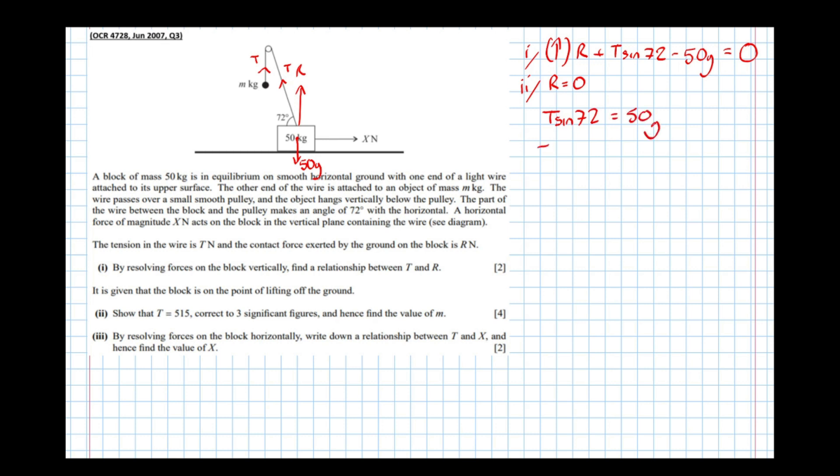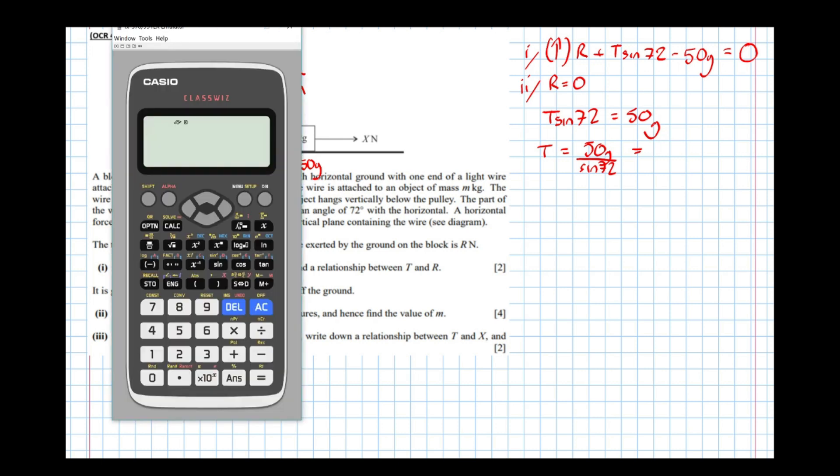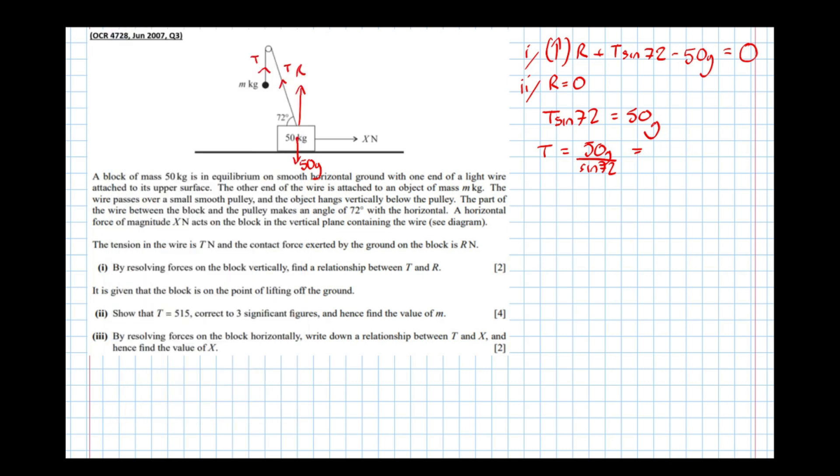Which means that t equals 50g over sine 72. Put it in the calculator, 50g divided by sine 72 is 515, which is what we're asked to show.